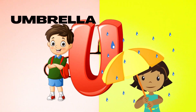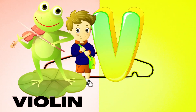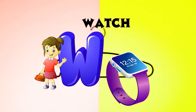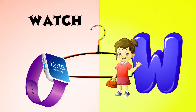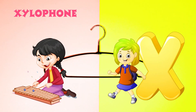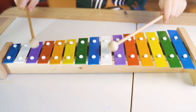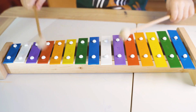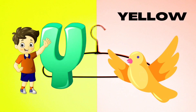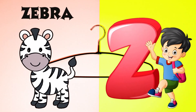U is for Umbrella, U-U-Umbrella. V is for Violin, V-V-Violin. W is for Watch, W-W-Watch. X is for Xylophone, X-X-Xylophone. Y is for Yellow, Y-Y-Yellow. Z is for Zebra, Z-Z-Zebra.